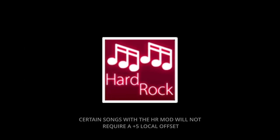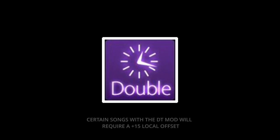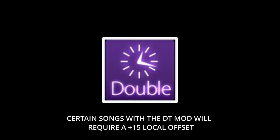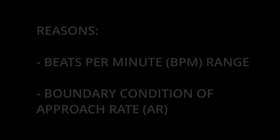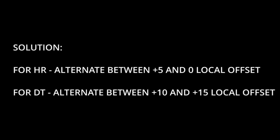You will find that some songs with the Hard Rock or HR mod require you to not add any offset at all. For the Double Time or DT mod, some songs require a positive 15 local offset. This is due to the BPM range and the boundary conditions of the Approach Rate (AR) for that particular song. However, for simplicity, simply alternate between the two given values of the local offset and see which value is more pleasant to play with.